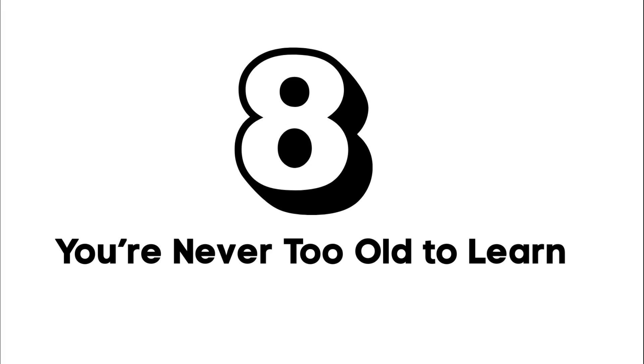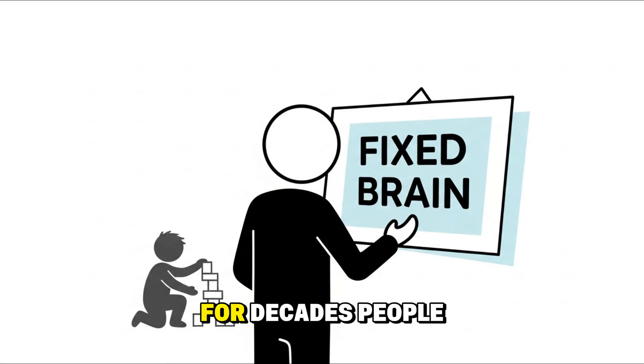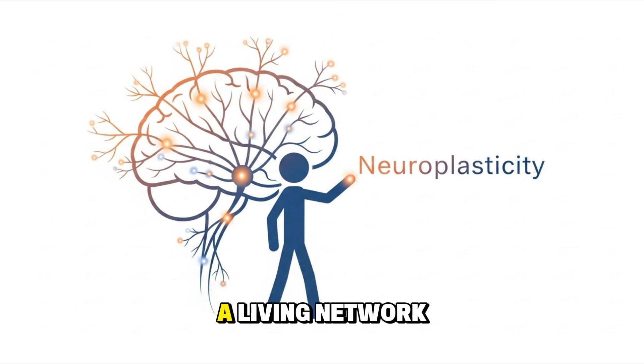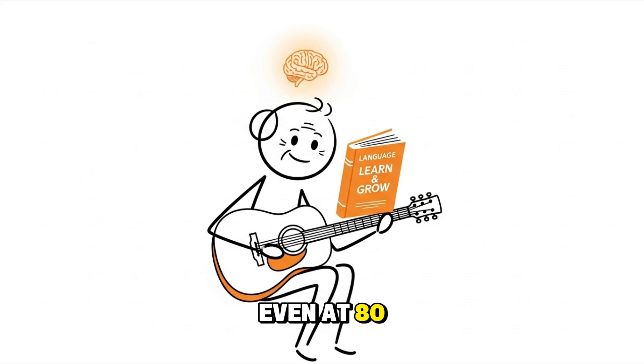Number eight: You're never too old to learn. For decades, people believed the brain stopped changing after childhood. But neuroscience now proves otherwise. Your brain is a living network, constantly forming new connections through a process called neuroplasticity. Even at 80, your mind can still learn a new skill, language, or instrument.